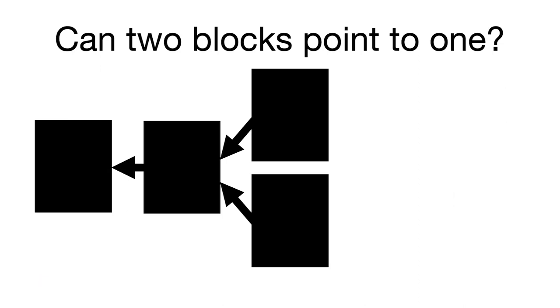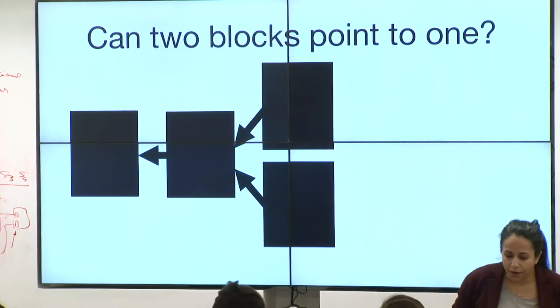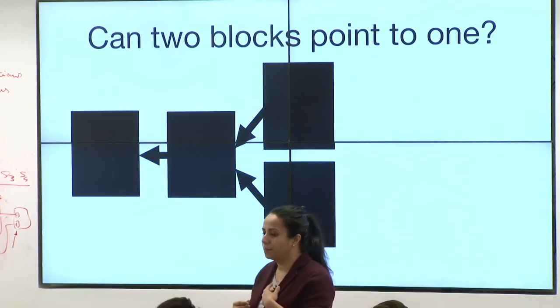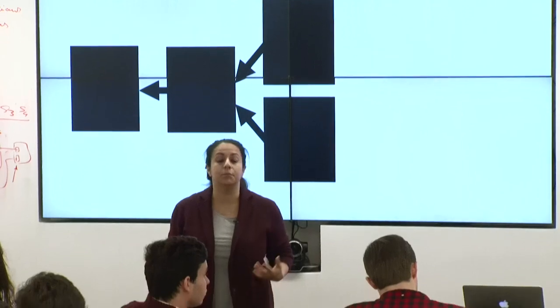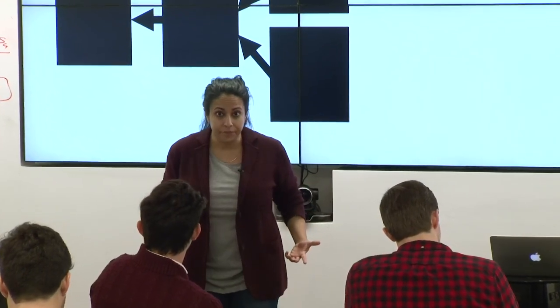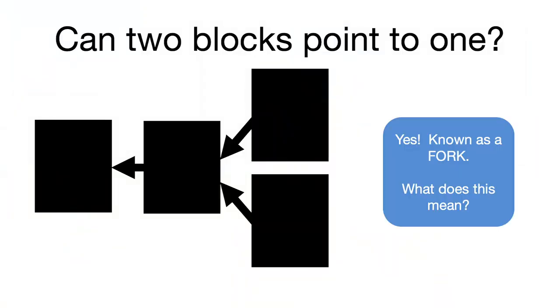However, can two different blocks point to the same previous block header? Yes, and this happens all the time. The reason is that the way blocks are found in the Bitcoin network is completely probabilistic. There are many people trying to find the next block at the same time, and it's entirely possible that two different miners will get lucky within the time it takes for a block to get gossiped around the network. Two people can find the same block at the same time — this is what's known as a fork.